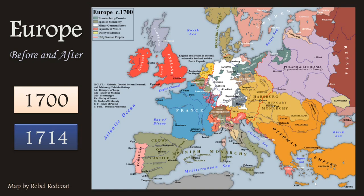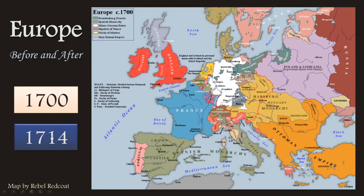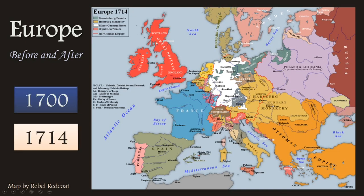Here is Europe in 1700, and here is Europe in 1714. You don't see very big changes. The biggest change, of course, is the Act of Union that united England and Scotland as one country, not just two countries with the same monarch. Spain still has the same borders, but by that time it is under new leadership, which we will discuss in the course of this lecture.